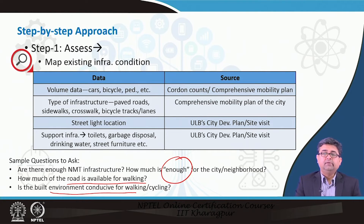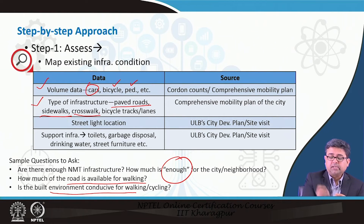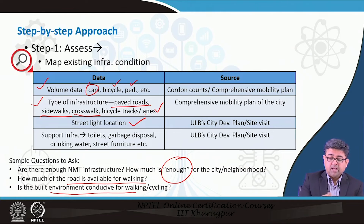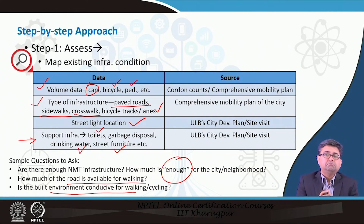To map all this you need different types of data — volume data for both non-motorized and motorized modes, type of infrastructure available (not only paved roads but where are the sidewalks, how long and wide are they, locations of zebra crossings), how many bicycle lane kilometers you have, where are the street lights and their coverage. For pedestrians specifically, you also need to know where public toilets, drinking water points, and street furniture such as benches are located. Unless you spatially know where everything is, it is not possible to quantitatively assess whether it is adequate for your city.